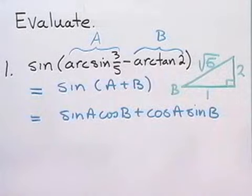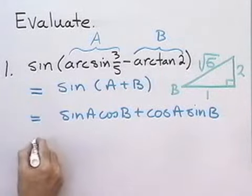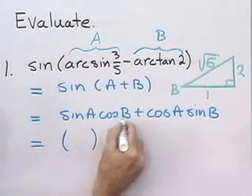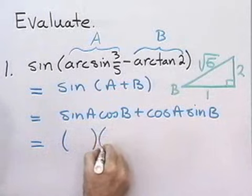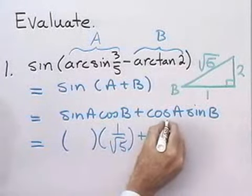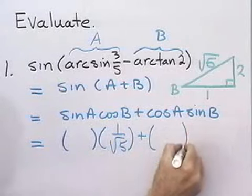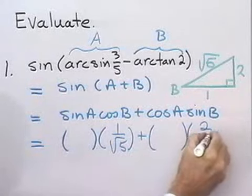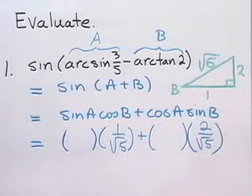Okay, that means that I can fill in a little bit of my formula here. I know that, well, I don't know what sine A is, but cosine of B is 1 over square root 5 plus cosine of A. I don't know what that is, but I do know what the sine of B is. It's going to be 2 over square root 5. Okay, so I have that filled in.